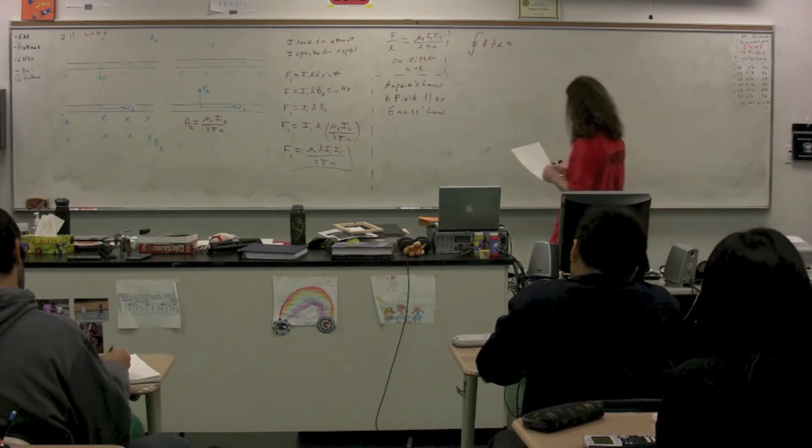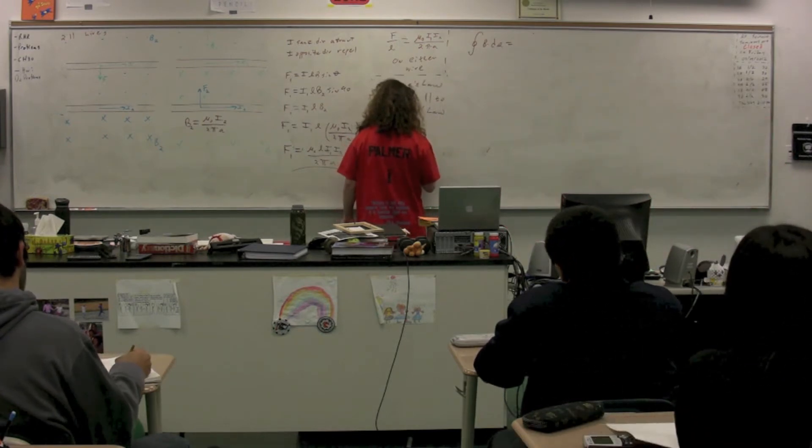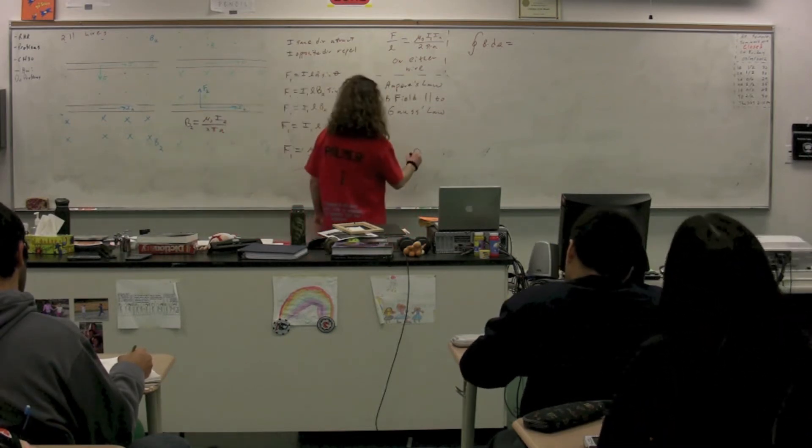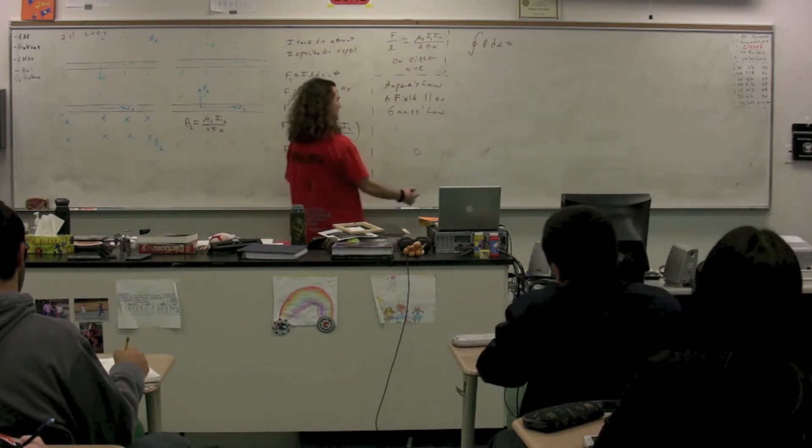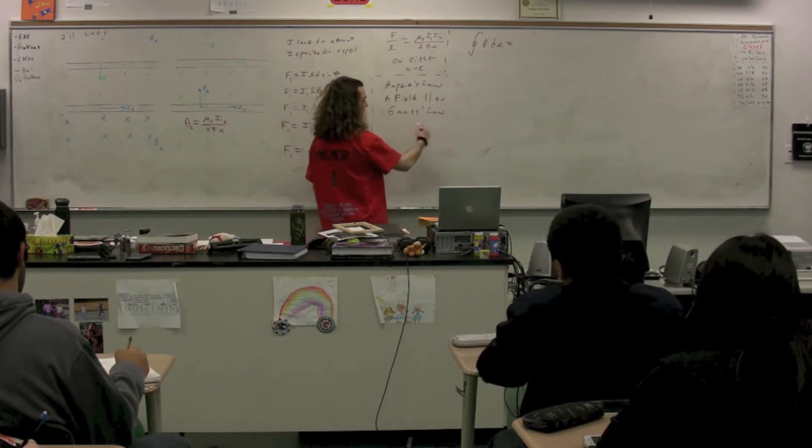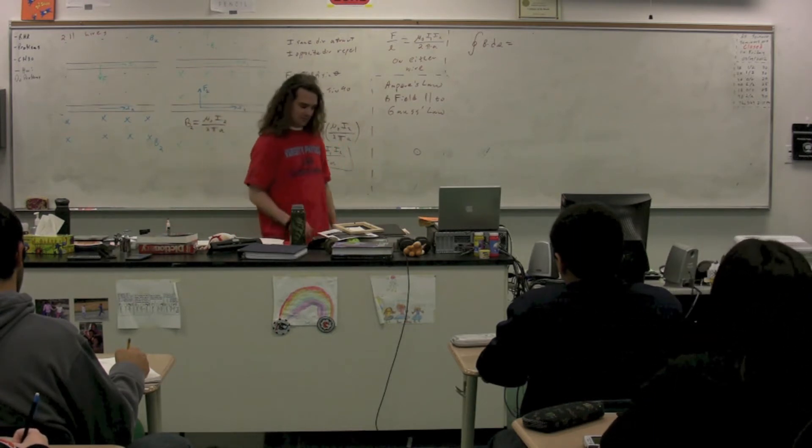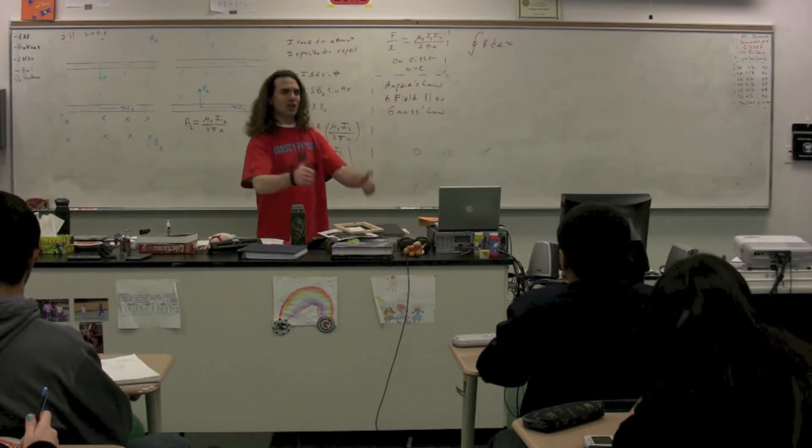So what we're going to do is we're looking at a current carrying wire. That current carrying wire is carrying current out of the board. So we already know that it creates a magnetic field which is in loops around this wire. We are going to, now, for Gauss's law we had to draw, come on people,